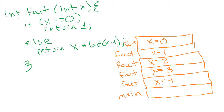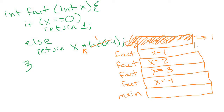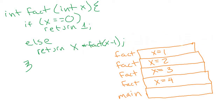When we reach the version with x equal to zero, we check if x equals zero — it does — so we pop this stack frame and return one back to the version where x was one. That version receives one as the return value for fact(0), computes one times one equals one, and returns one. Then that stack frame is popped and we return one back into the version where x was two.